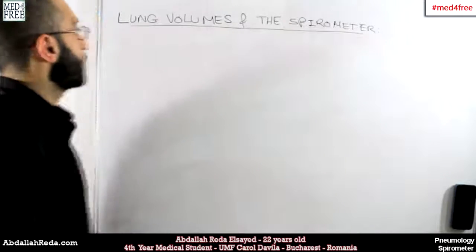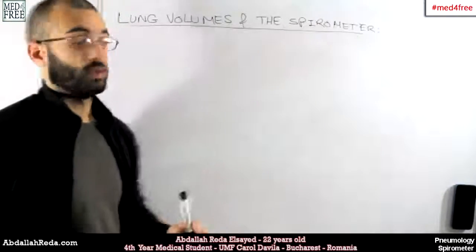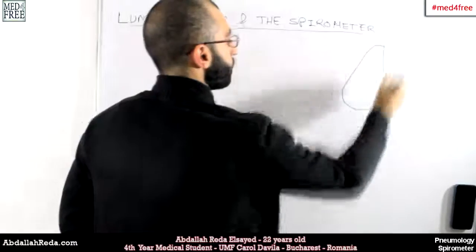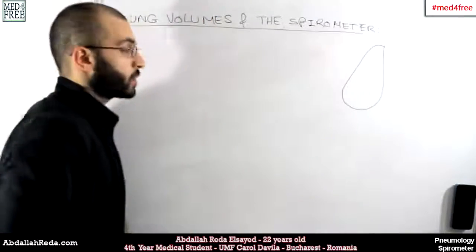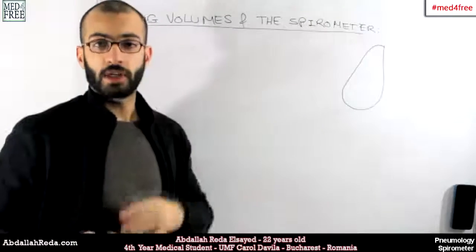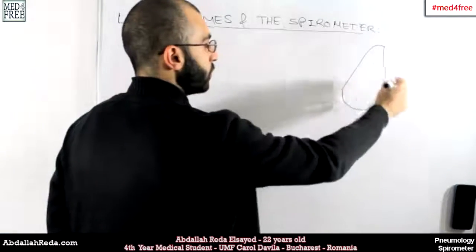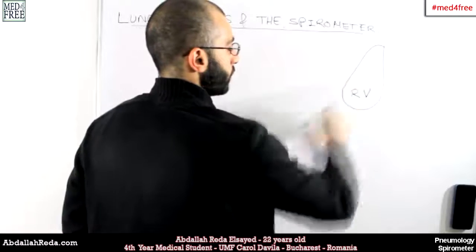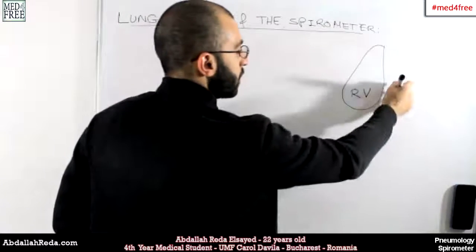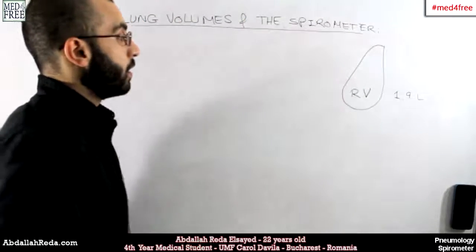Hello everyone and welcome back. Today we're going to discuss the lung volumes and the spirometer. The spirometer is the device that is used to measure the lung volumes. First, we draw the lung containing only the minimum amount of air possible — the air inside without any inspiration or expiration effort. That volume is called residual volume, and it's around 1.8 to 1.9 liters.